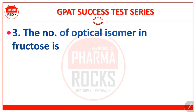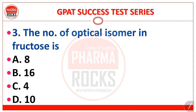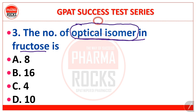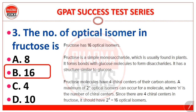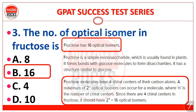Next, question number 3: the number of optical isomers in fructose is — 8, 16, 4, or 10? The question is regarding optical isomers of fructose. The correct answer is 16. Fructose has 16 optical isomers.